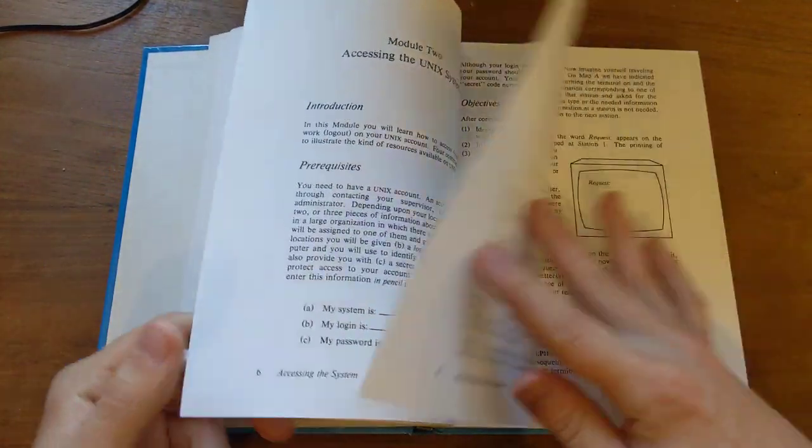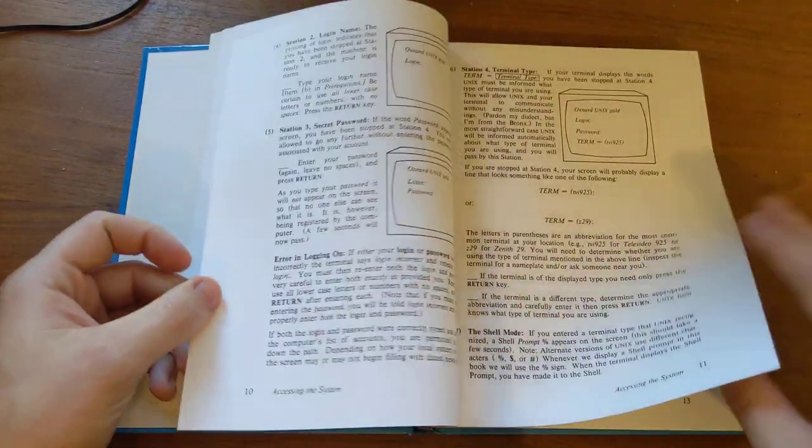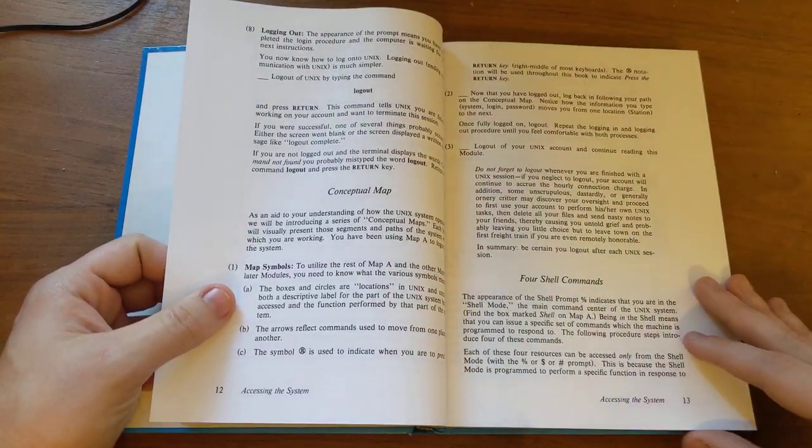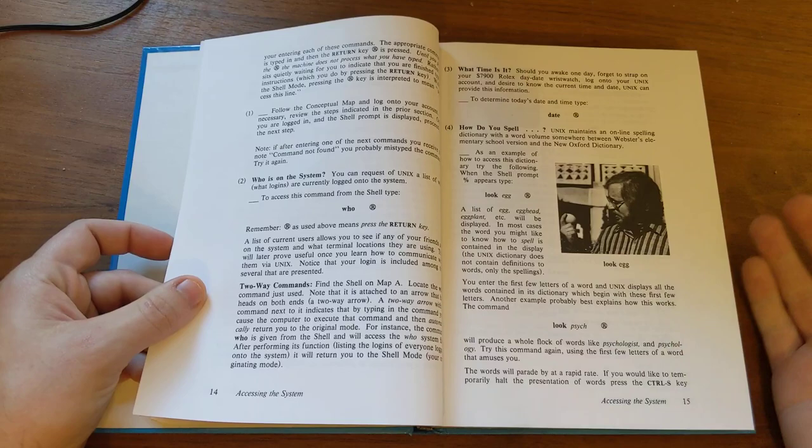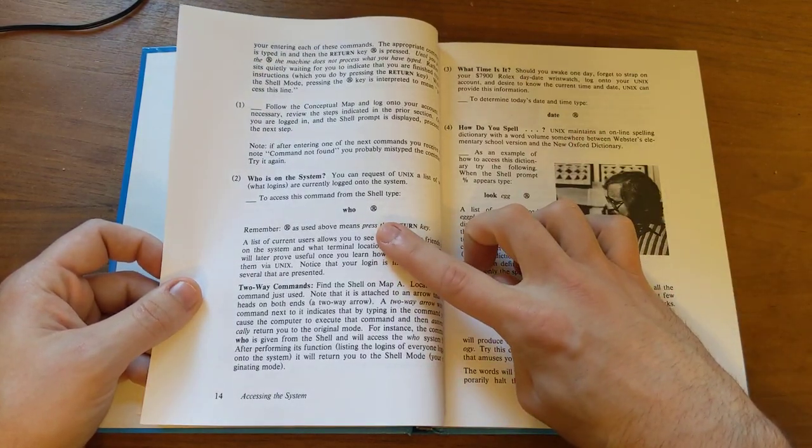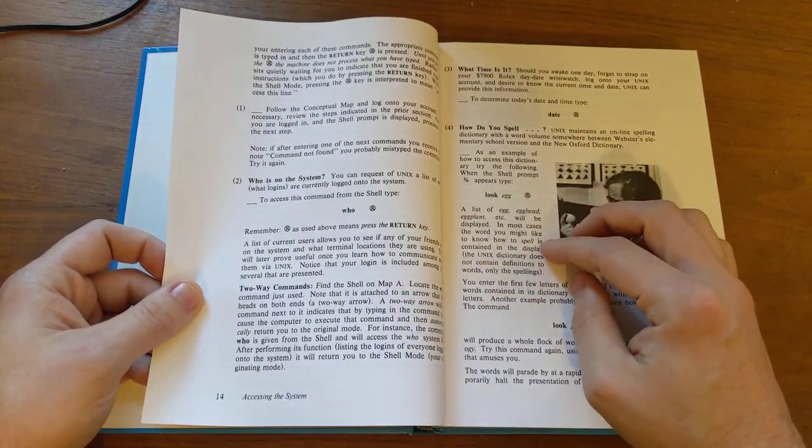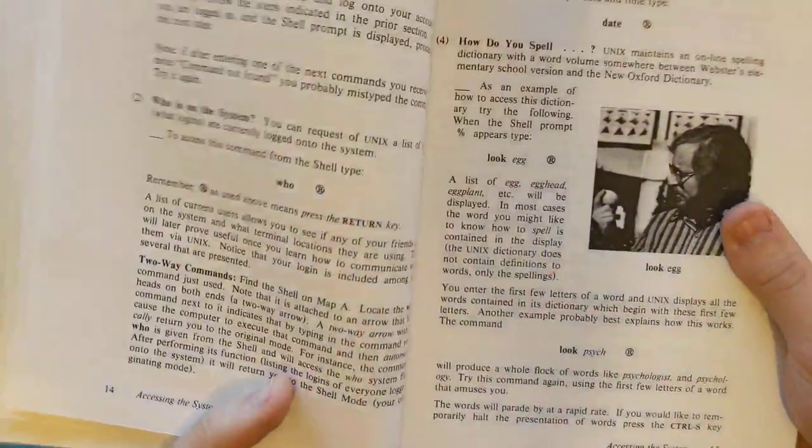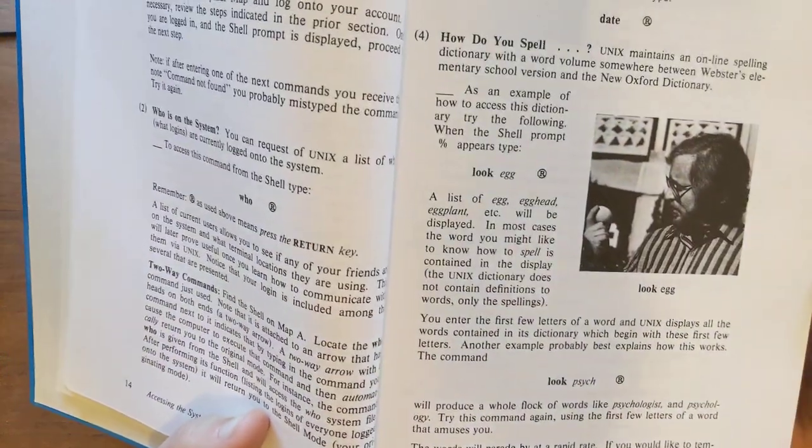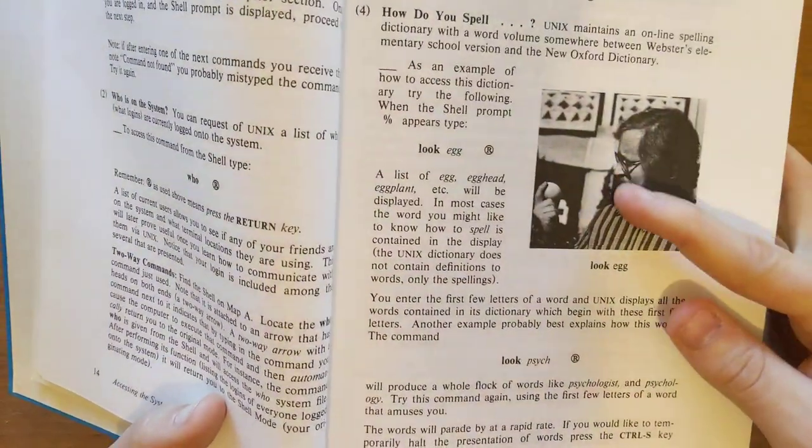All right, so at the very beginning, you know, it's just, like, logging on. I'll skip through some of this. I'm gonna skip through basically all the book, but just to give you an idea. They have, like, pretty simple, you know, how to use basic commands. So they have, like, get your date, get who, who's on the system. I mean, these are still commands.